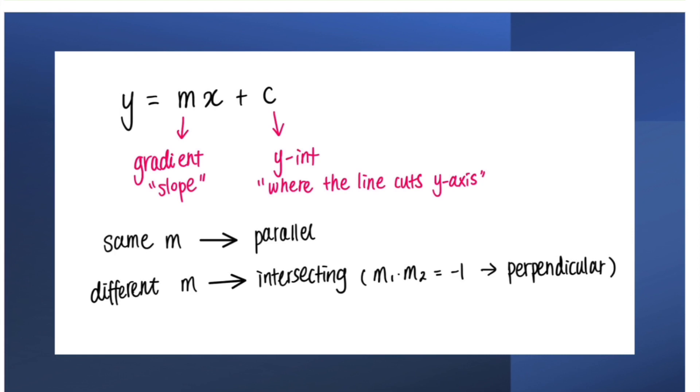When two lines have different m values, the lines will intersect, because when gradients are different, the two lines are no longer parallel. A special case is that if the two gradients multiply to negative 1, the two lines are perpendicular. We've talked about this before, so we won't spend too much time on this.